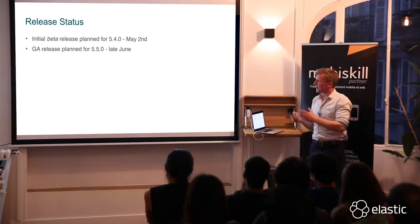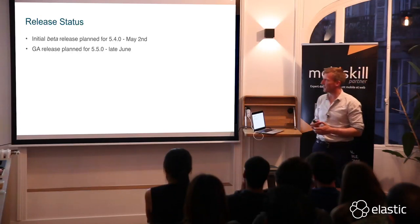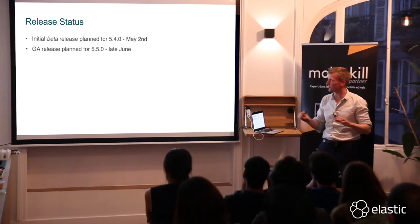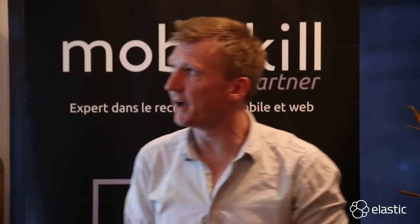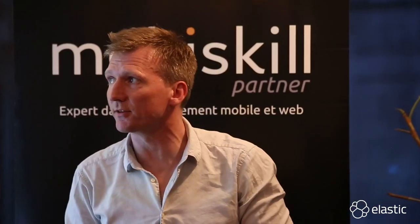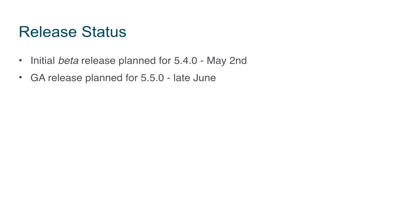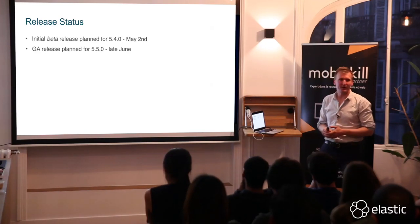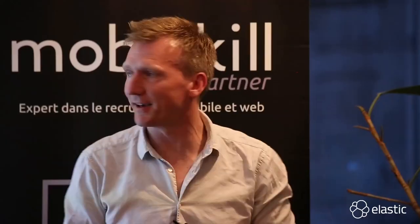Current status: we're in hectic development at the moment. We've got feature freeze of the product and we're going through final testing. It's planned for release on May 2nd — that will be a beta release, mainly because it involves a lot of code churn. There's been a lot added to Elasticsearch and to the ML product to enable this. We're planning to then make it GA available in late June. More than happy to answer any questions. Thank you.